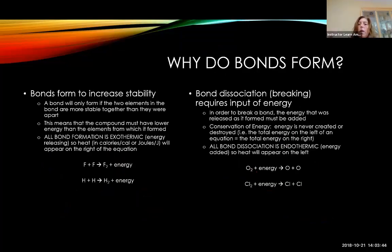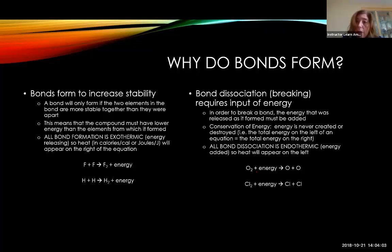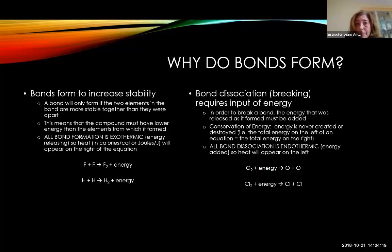So why do bonds form? In order to understand what kinds of bonds form and why certain bonds form between different atoms, we have to think about what causes a bond to form in the first place. One general rule of chemistry is that particles always want to be as stable as they can possibly be. Stable means lower energy. For a bond to form, it must increase the stability of the atoms — if the two atoms are not more stable or in a lower energy state when they're together, they will not combine. So when a bond forms to increase stability, that bond formation must always be exothermic. Energy has to leave; a bond only forms when the two things are more stable than they were apart.